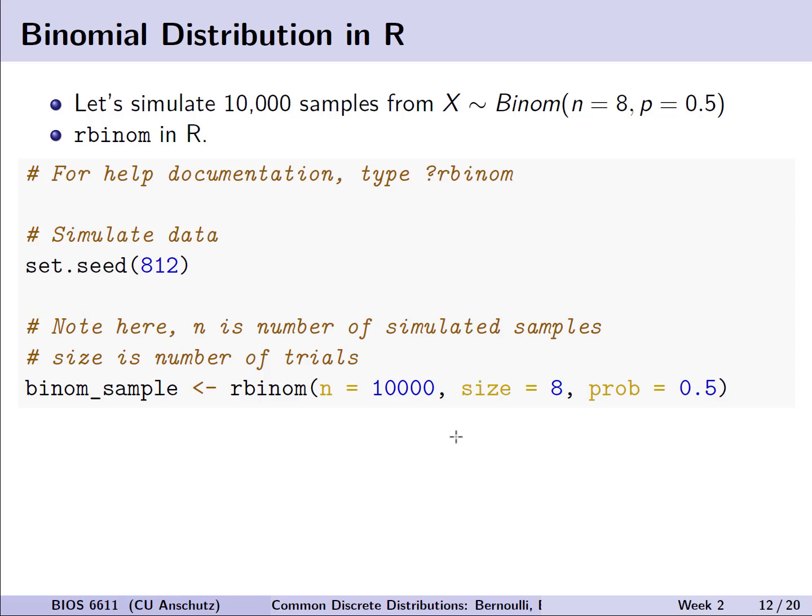For this example, let's try simulating 10,000 samples from a random variable X, which is binomially distributed with n equals 8 trials and a probability of success of 0.5. Imagine we're doing eight coin tosses with a 0.5 probability. We're going to use the rbinom function in R to generate these random binomial observations. The first thing to note is that we need to set our seed for reproducibility.